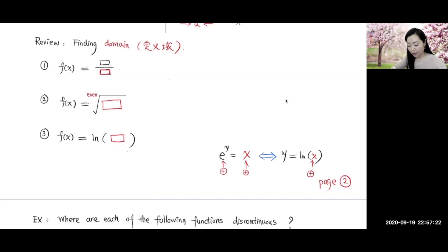Number one, if the function involves a quotient, it's required that the denominator is not equal to zero.